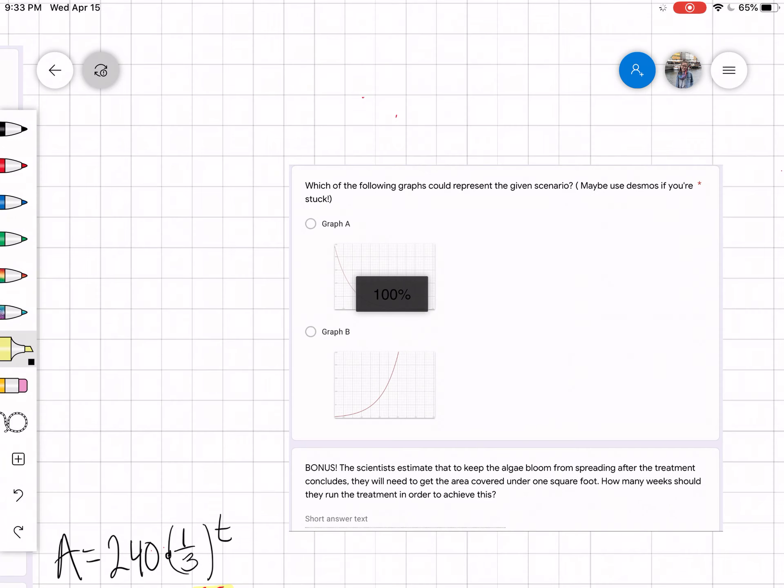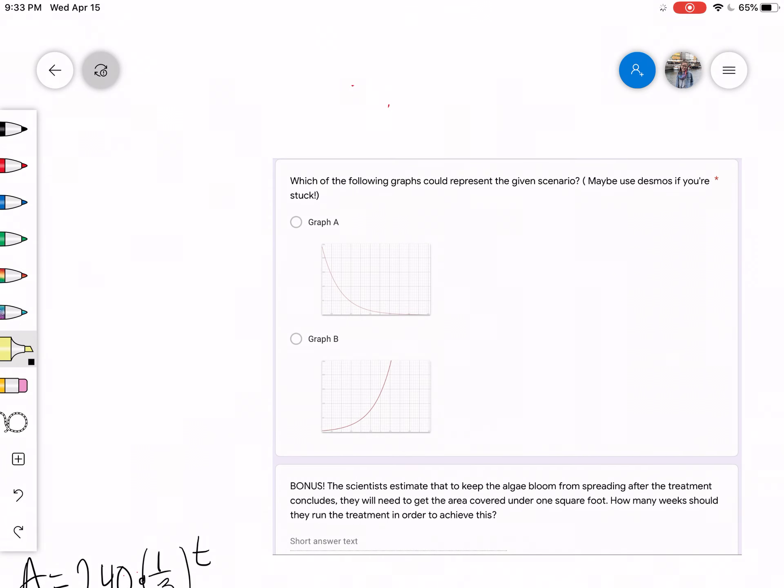And now our last problem that we're going to work on is, which of the following graphs could represent the given scenario? Maybe use Desmos if you're stuck. So let's think about, if we were to look at this right here, and right here is our time. Let's think about, as time goes on, remember our algae is decaying. As time goes on, which one shows that the algae is decaying? It's getting decreasing. Would graph A show that the amount of algae is decreasing, or would graph B show that the algae is decreasing?